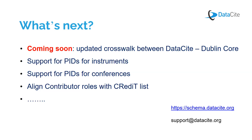A question: which resource type general do I use for an article in a collected edition — book part is not possible, should we use book chapter? For an article in a collected edition, we would say chapter. We have that challenge with MODS also, and we choose to use chapter.